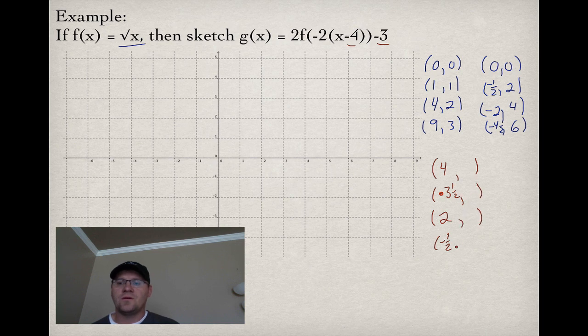And finally, our y values all change by negative 3. We subtract 3 from each value. It's now negative 3. This was 2, it's now negative 1. It was 4, it's now positive 1. And it was 6, so now it's positive 3.